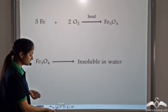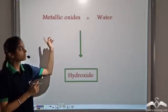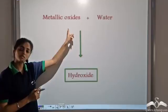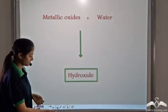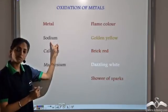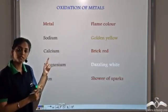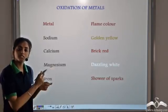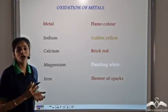All the metals form the corresponding metal oxides on reaction with oxygen. The metallic oxides, when they react with water, form the corresponding metal hydroxides. When sodium is heated in the presence of oxygen, we get a golden yellow flame. Calcium gives a brick red flame. Magnesium gives a dazzling white flame. And iron burns in the presence of oxygen producing a shower of sparks.